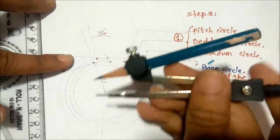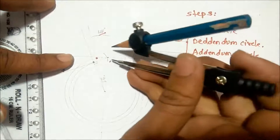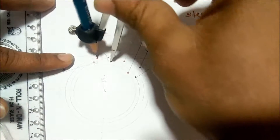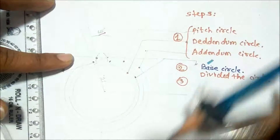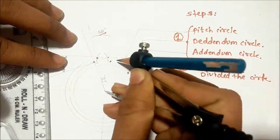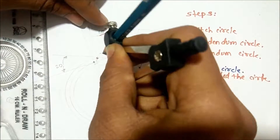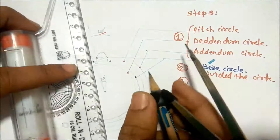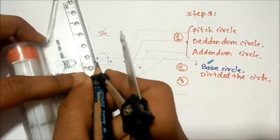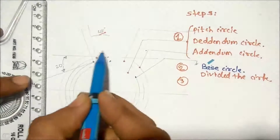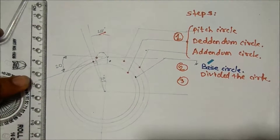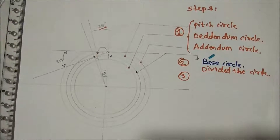With the same distance, put the compass nib on the base circle and make an arc from the base circle outward. As you can see, two arcs are now completed, forming the involute tooth profile.